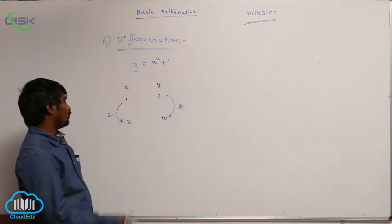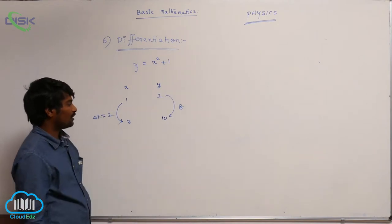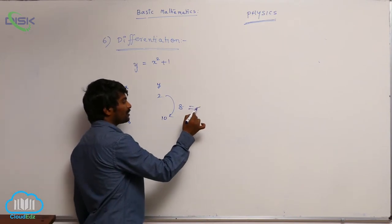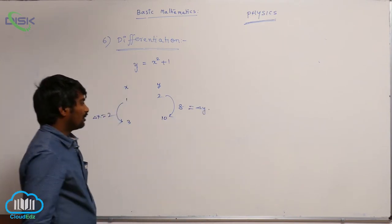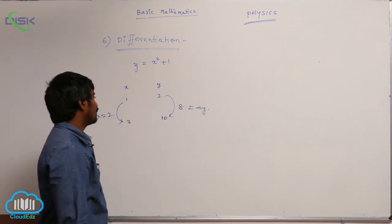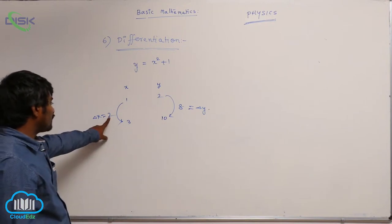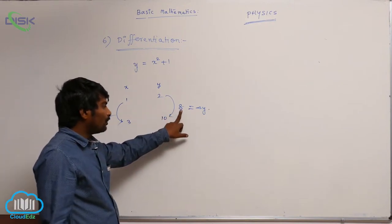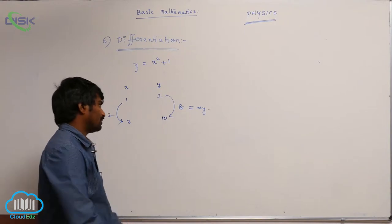We call this change in x as delta x, and we call this change in y as delta y. That means if x increases by 2, y value increases by 8.